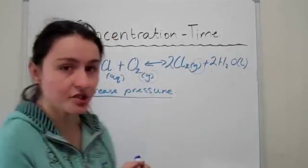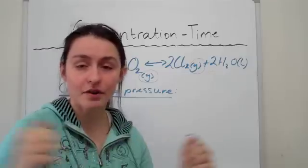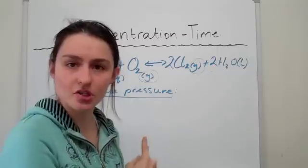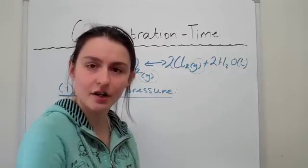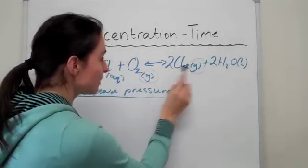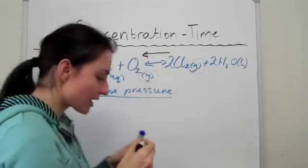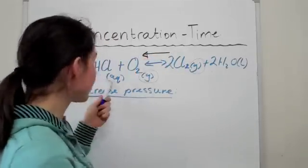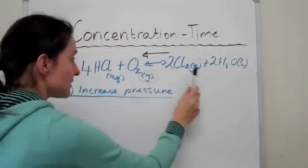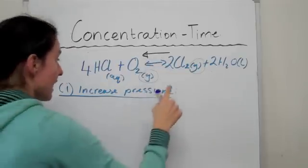So since the particles get closer together, the gaseous particles get closer together, we want them to be back further apart like they were initially. So what the reaction does is it chooses the direction that produces less particles, so you're kind of spreading out the distance between them if you're producing less particles. So compare two gaseous particles to only one gaseous particle means that you're going backwards that way. You don't look at the liquid, you do not look at the aqueous because they're not going to be affected by pressure. So an increase in pressure means that this equilibrium system will go backwards.